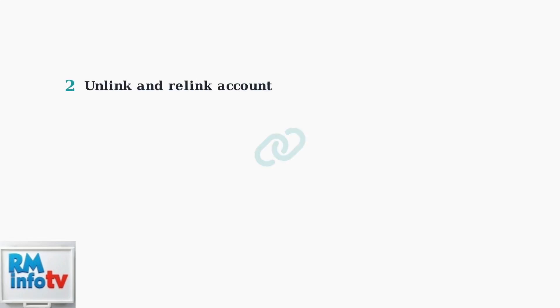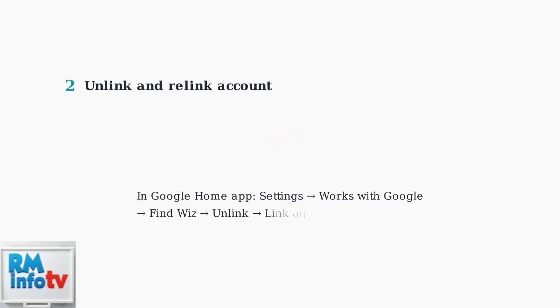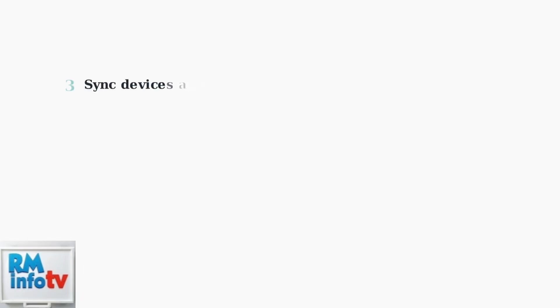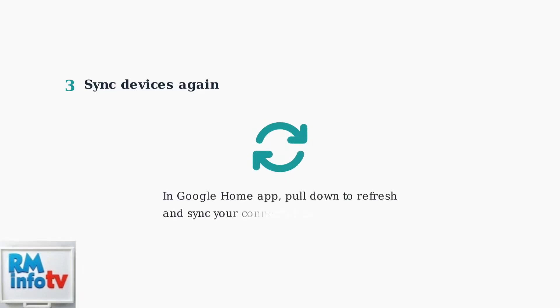Try unlinking and relinking your Wiz account in the Google Home app. Go to Settings, then Works with Google. Find Wiz, unlink it, and then link it again. Sync your devices again within the Google Home app — simply pull down to refresh and sync all your connected devices.